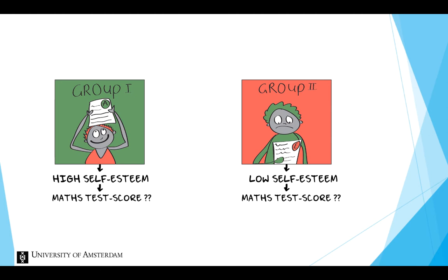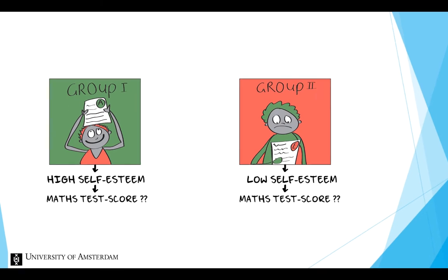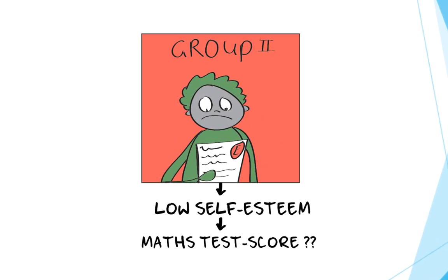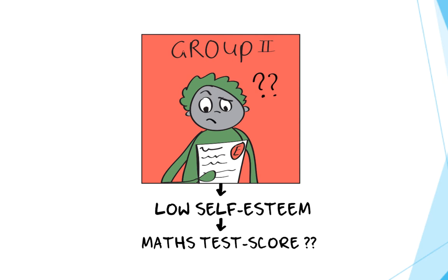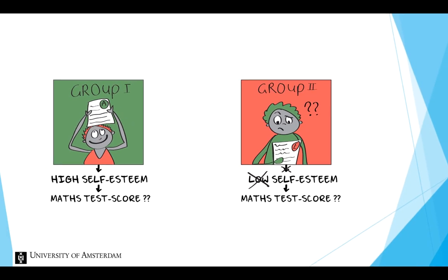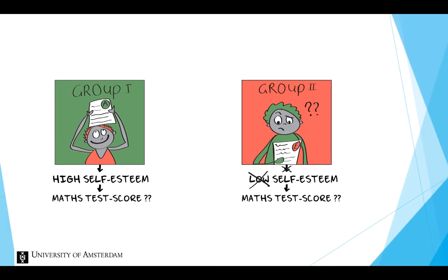It is important to keep in mind that manipulation can also fail. It could be that the intelligence test was very easy for the participants in the second group, and therefore they did not believe that their score was very low and their self-esteem is not influenced at all. In fact, researchers quite often try to measure whether their manipulation was successful, if the intended level of the independent variable was actually experienced. This is called a manipulation check.